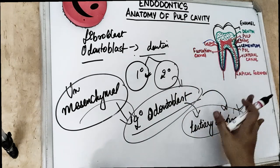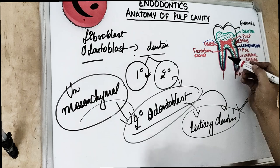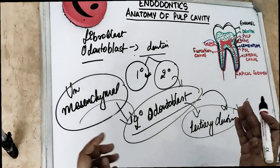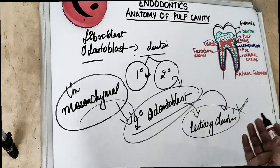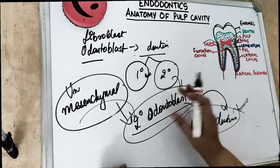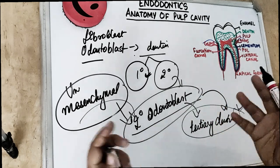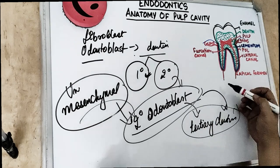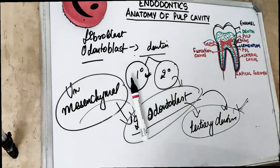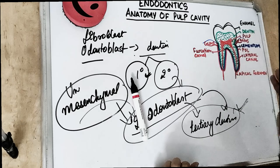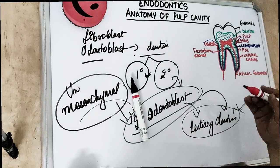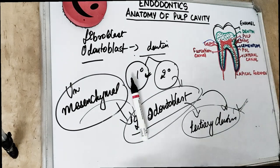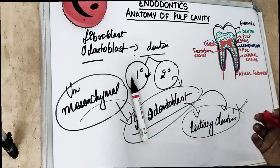The pulp is surrounded by hard dentine, which does not allow the pulp to expand if pressure builds up. As you can see, the pulp canals are enclosed by the green dentine layer overall. In case of pressure buildup, the pulp tissue is compromised as there is only one way for blood vessels to enter and exit. This means there are chances of infection as the pulp lacks collateral circulation.